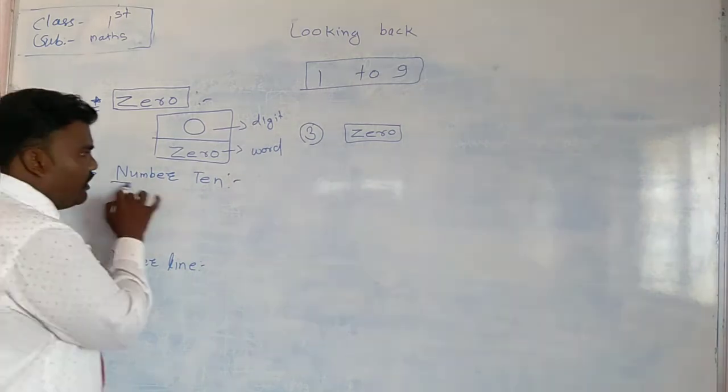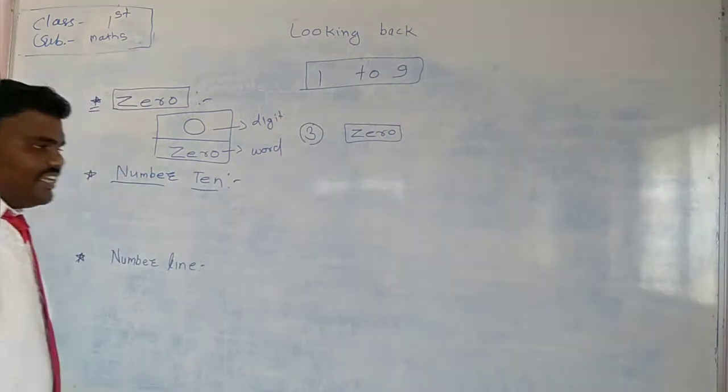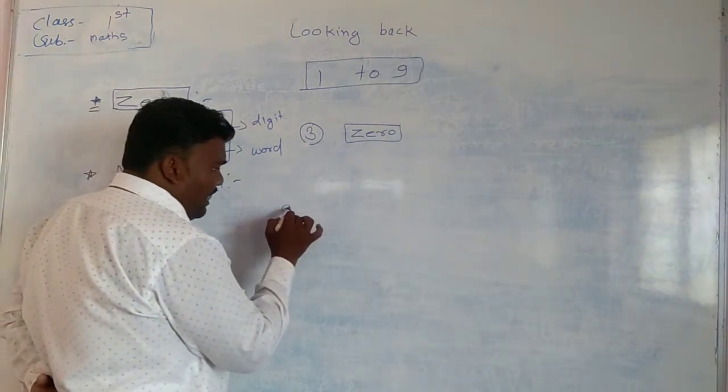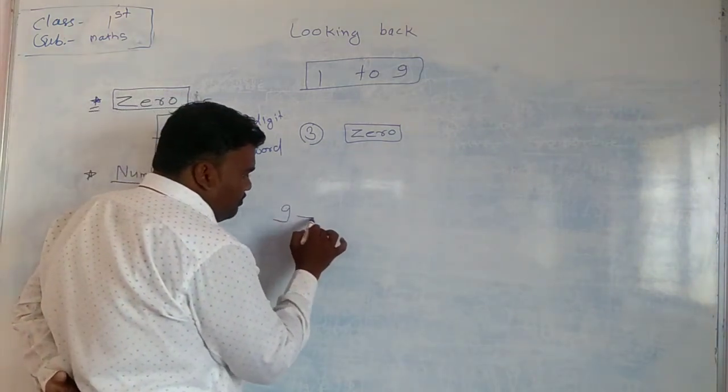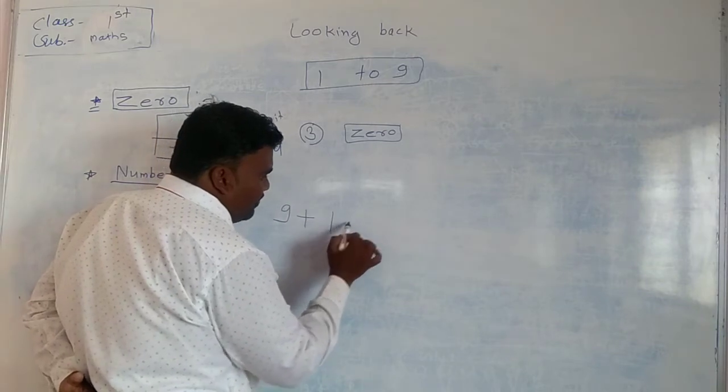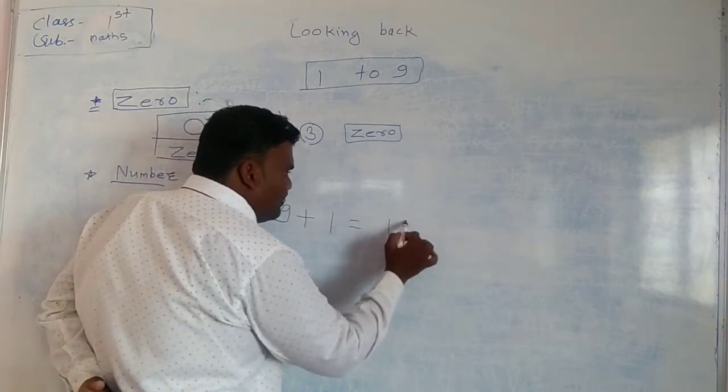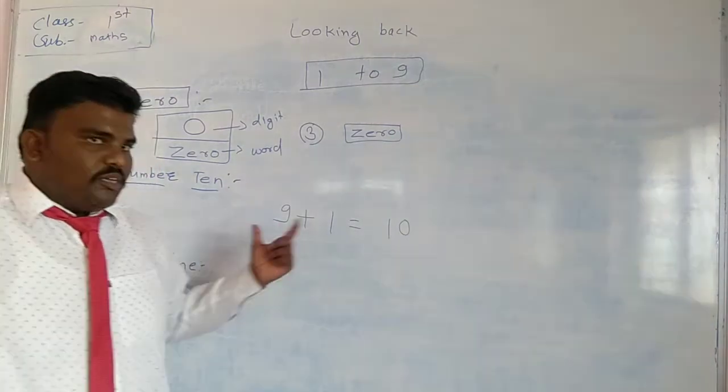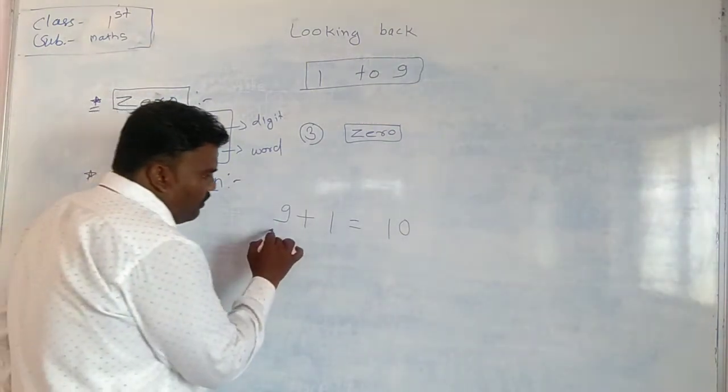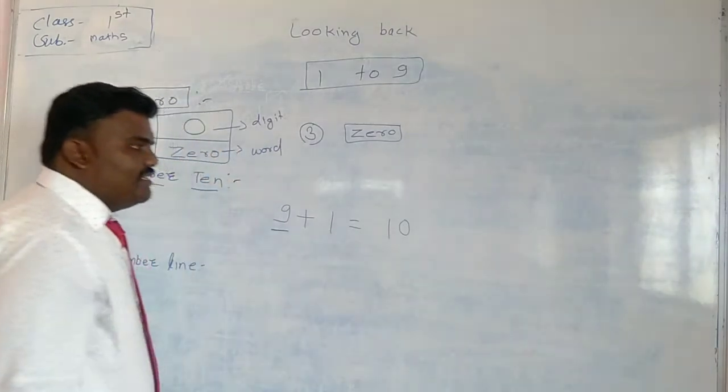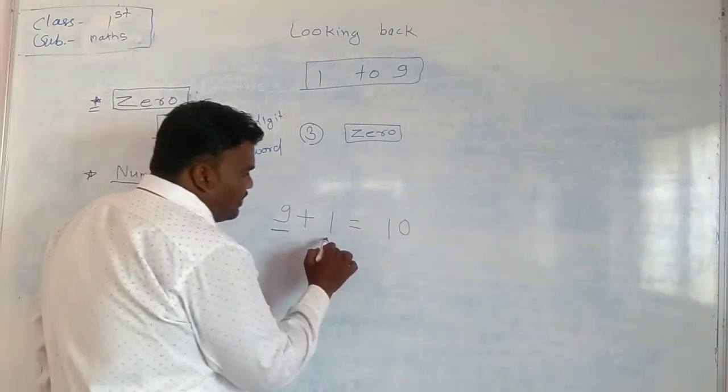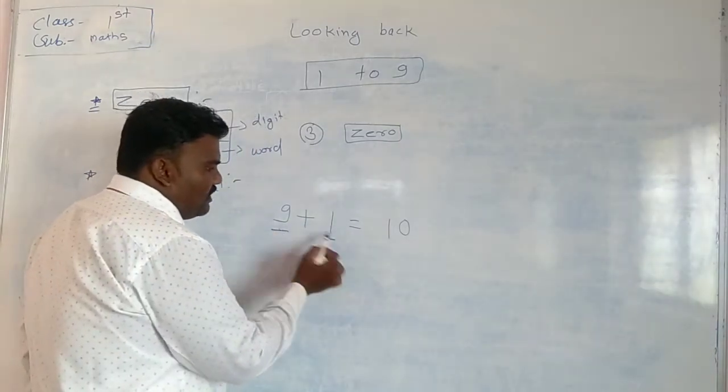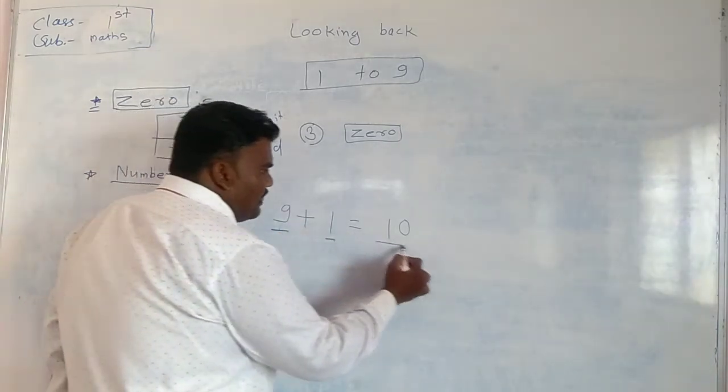Let's talk about the number 10. How to write a 10? If we add 9 with 1, we will get a 10. Suppose you have 9 chocolates and your friend gives you 1 chocolate. Then 1 plus 9 will be 10.